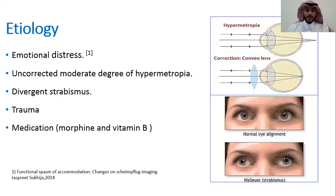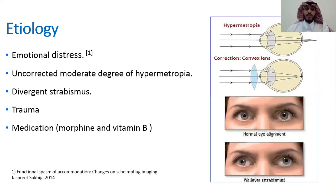The causes of accommodation spasm include emotional distress, uncorrected refractive error, divergent spasm, trauma, or even the use of some medications.